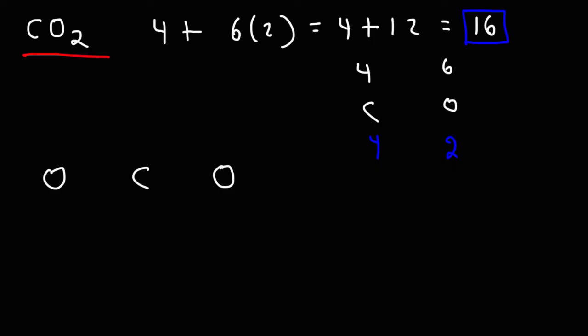If carbon likes to form four bonds and each oxygen atom likes to form two bonds, then it makes sense to put a double bond between carbon and oxygen. This way, every oxygen atom has two bonds, and carbon has four.